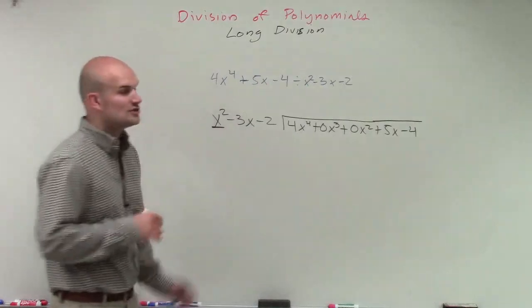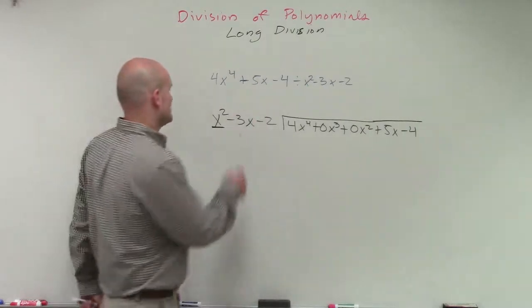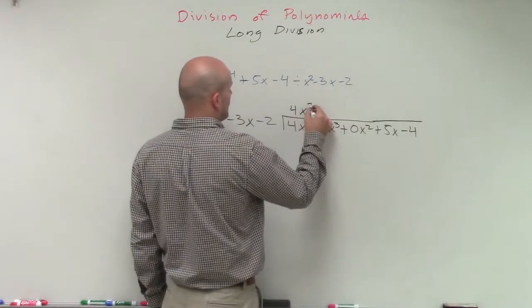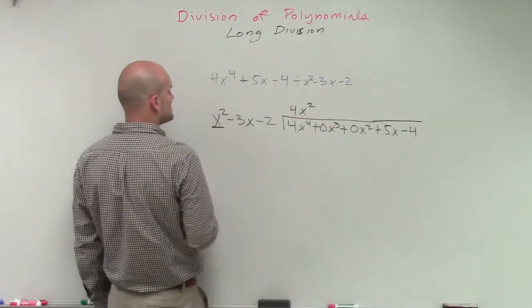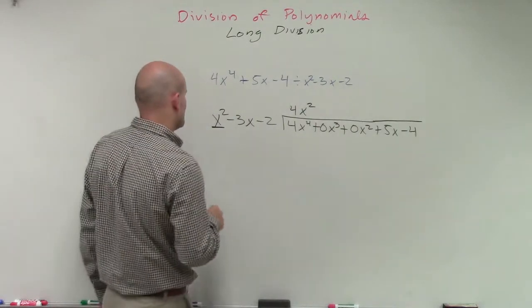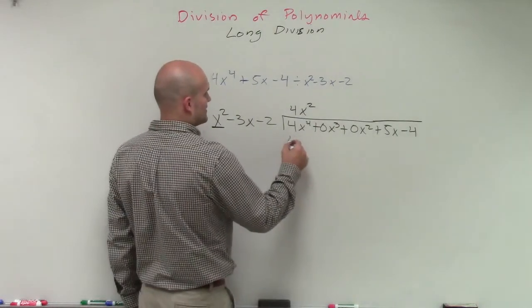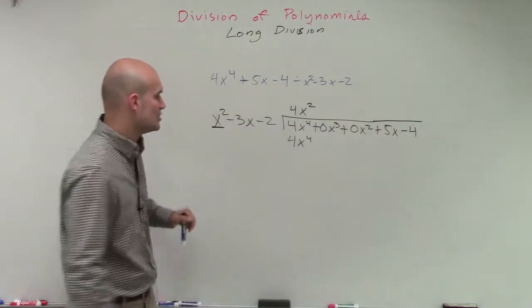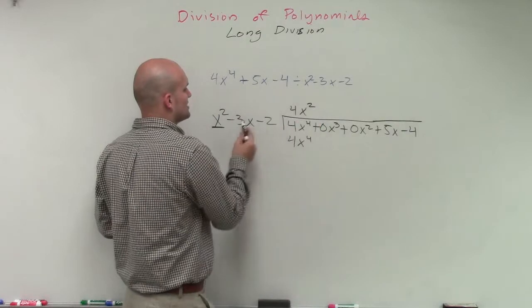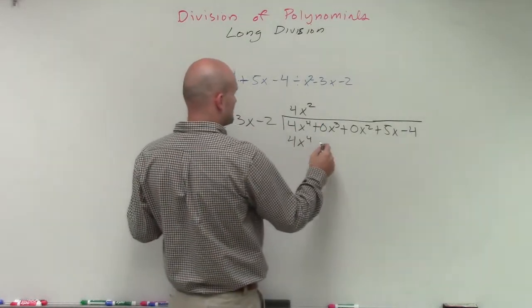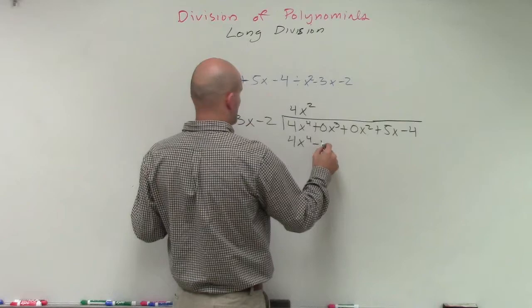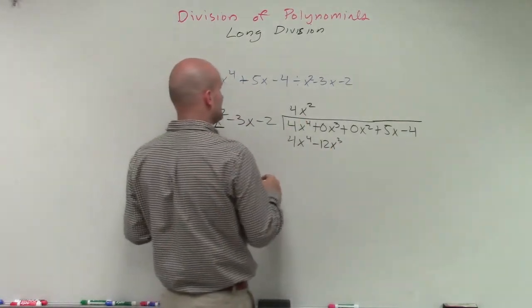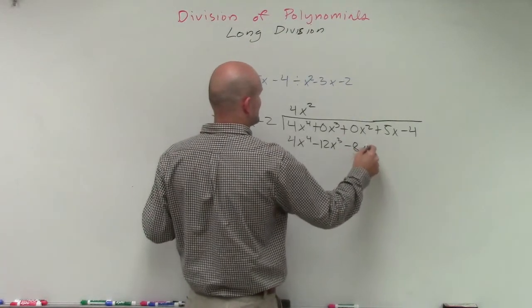All right. So again, we always take our first term and divide it into our divisor. So x squared divided into 4x to the fourth is going to be a positive 4x squared. 4x squared times x squared is going to leave us with 4x to the fourth. But remember, we need to make sure we multiply this times every single one of these terms. So 4x squared times a negative 3x is going to leave us with a negative 12x cubed. And 4x squared times a negative 2 is going to leave us with a negative 8x squared.